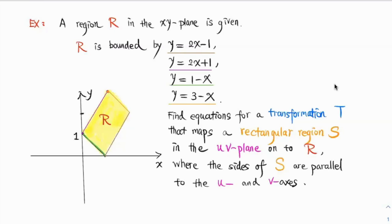R is bounded by four lines. Notice that this corresponds to the brown line here. The purple is this one over here.